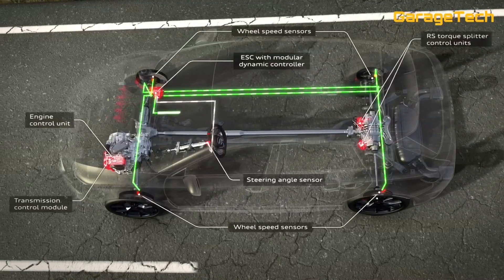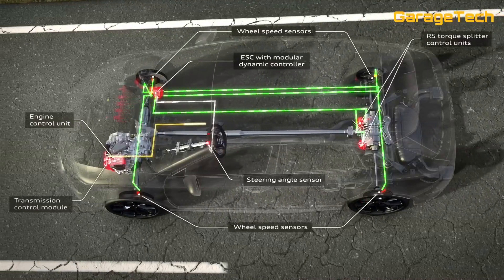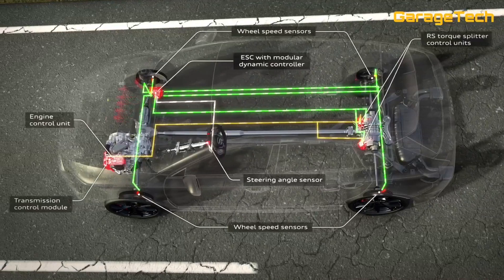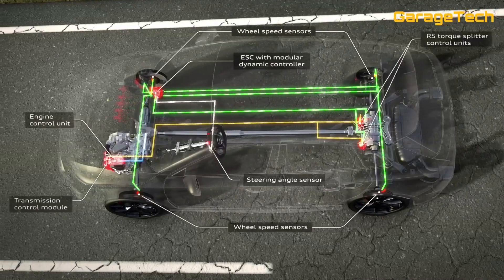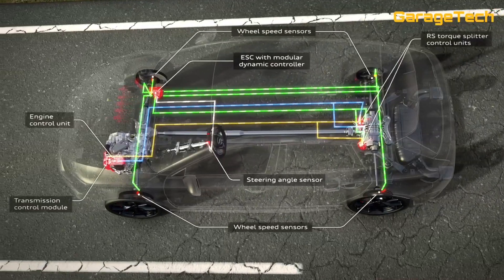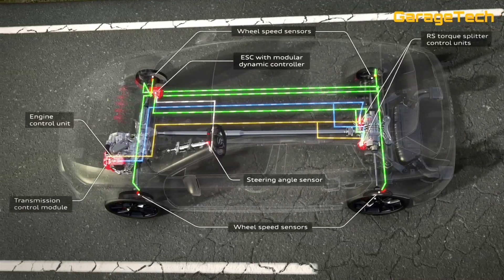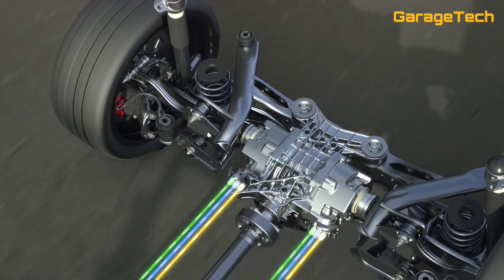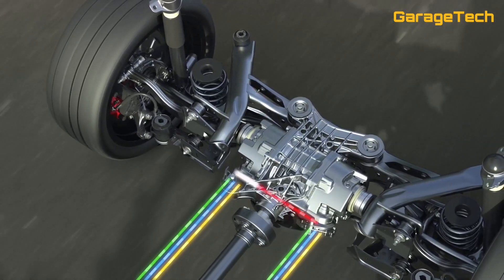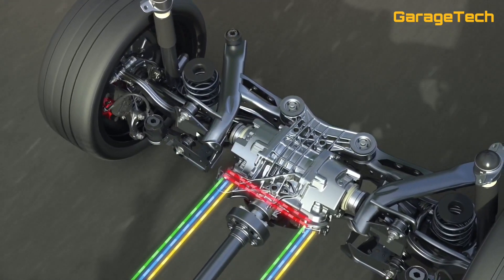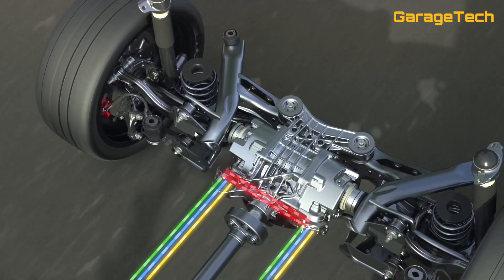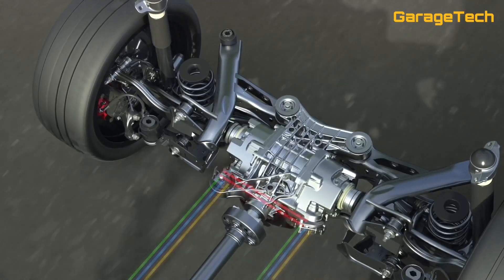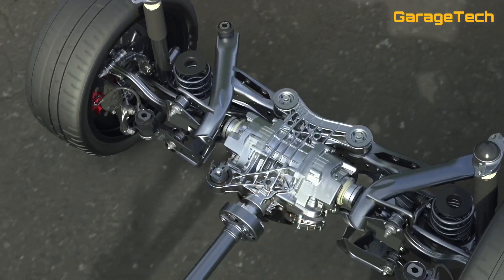Other influencing factors include the longitudinal and lateral acceleration, steering angle, the position of the gas pedal, selected gear, and the yaw angle sensor. Audi drive select modifies the characteristics of the torque splitter and thus the car's handling depending on the selected mode.